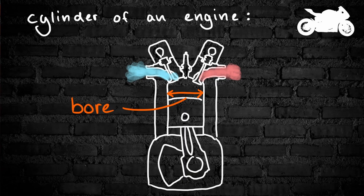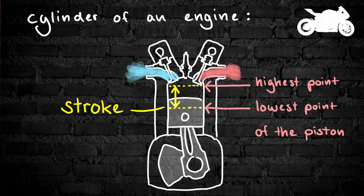Let's look at a cylinder. In most motorcycles, the bore — which is the diameter of the cylinder — is larger than the stroke. In most car engines it's the other way around. The stroke, in terms of engine geometry, is the distance the piston travels from the top dead end to the bottom dead end. The reason behind this is that most motorcycle engines are designed RPM-oriented, while most car engines are designed torque-oriented.